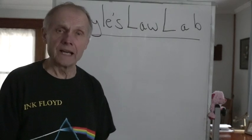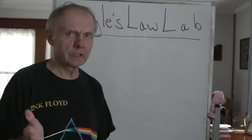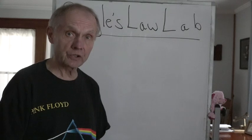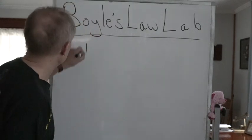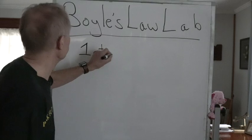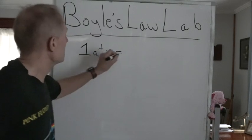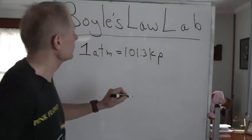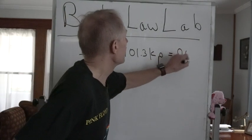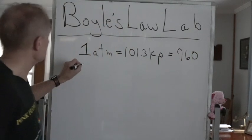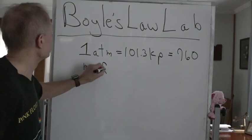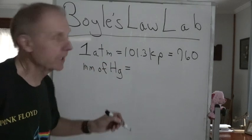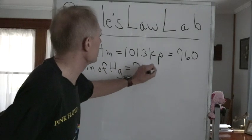Boyle's Law Lab. The first thing we have to figure out is, you all know what standard pressure is. Standard pressure is 1 atmosphere, or 101.3 kilopascals, or 760 millimeters of mercury, which is the same thing as saying 760 Torr.